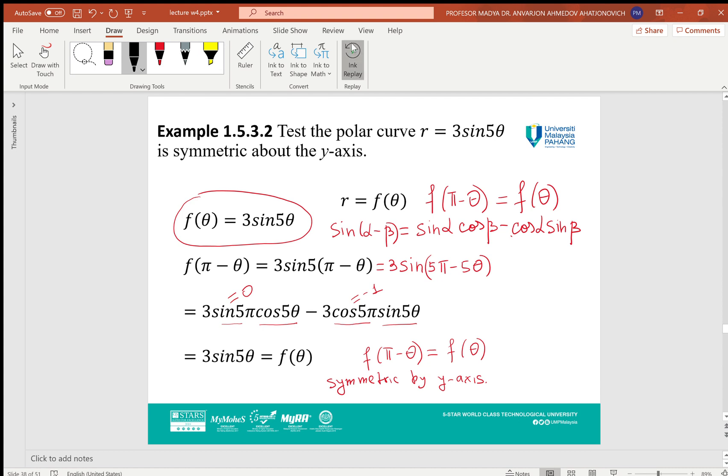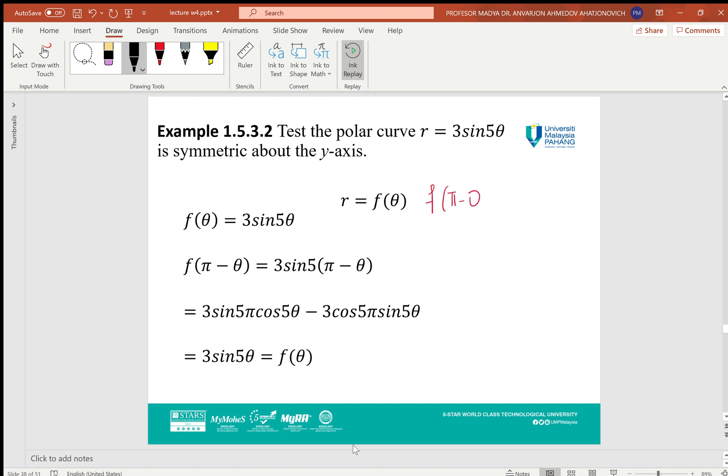Let's consider this example: Test the polar curve r = 3sin(5θ) is symmetric about the y-axis. We need to check the formula f(π - θ) equals f(θ). We take 3sin(5θ) and consider f(π - θ), and we apply the formula sin(α - β) = sin(α)cos(β) - cos(α)sin(β).